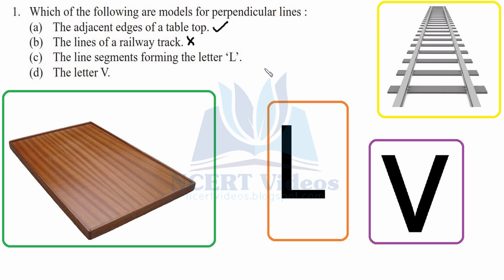The line segments forming the letter L - here you can see one line segment is perpendicular to the other, intersecting at 90 degrees. Therefore they make perpendicular lines. The letter V - you can see they cross each other but do not make perpendicular lines. They are intersecting lines. That was question one.